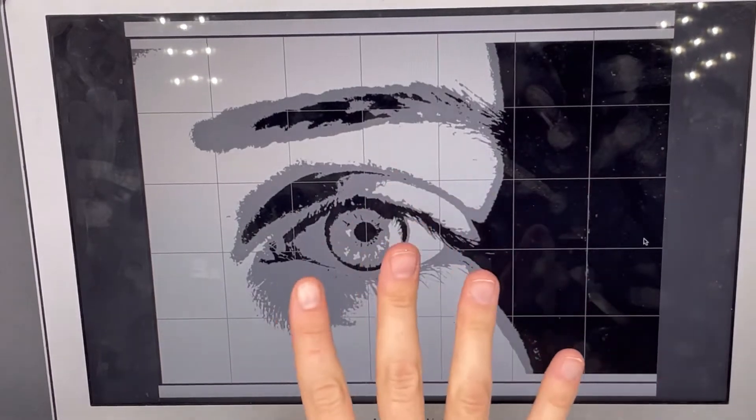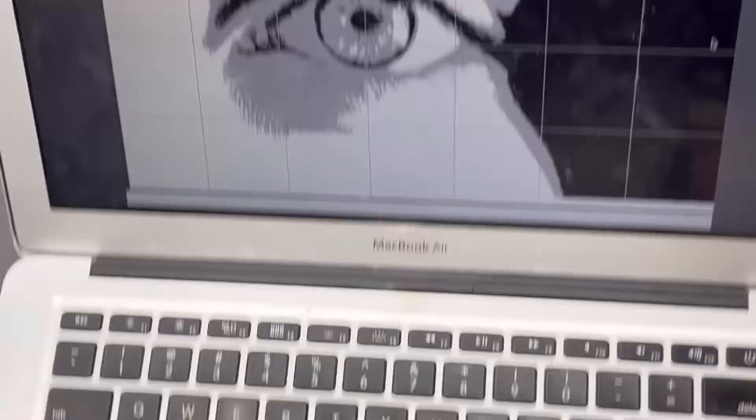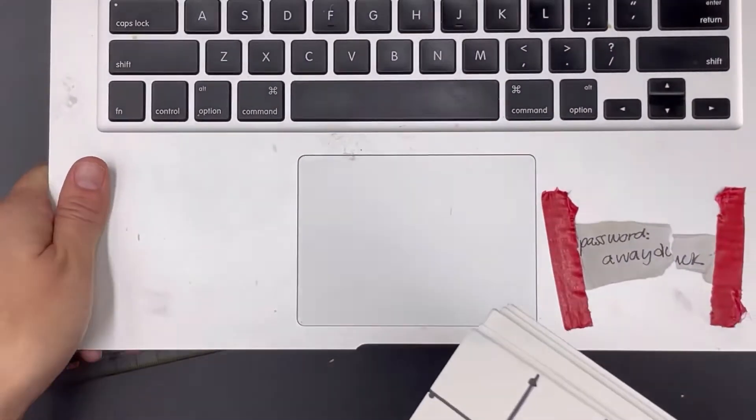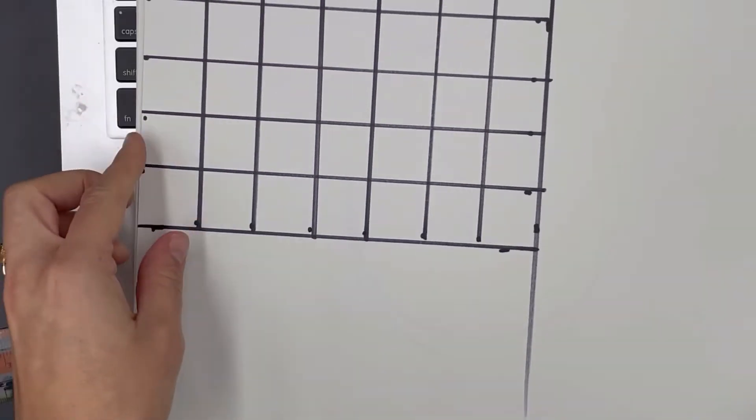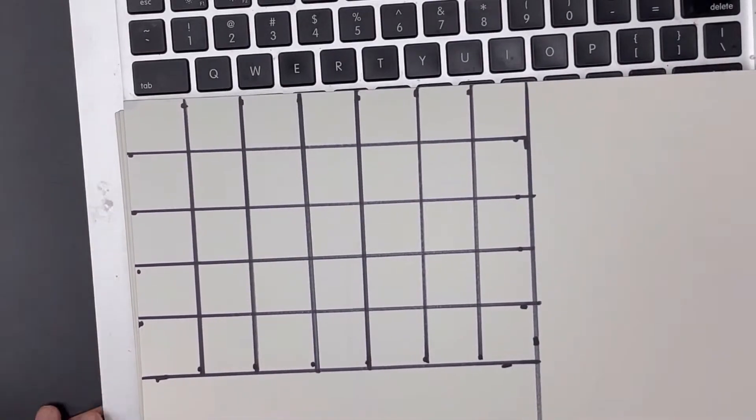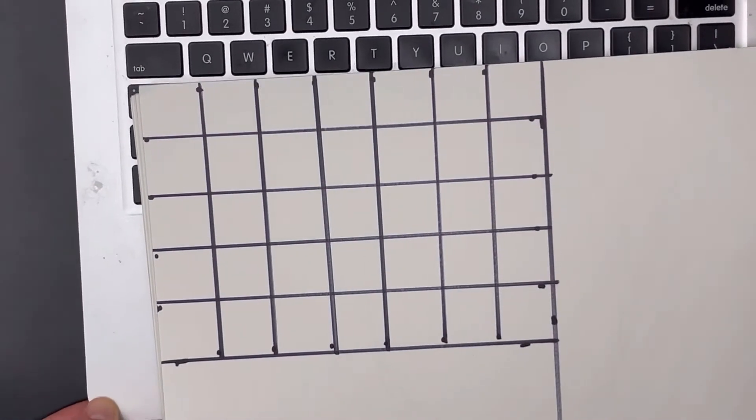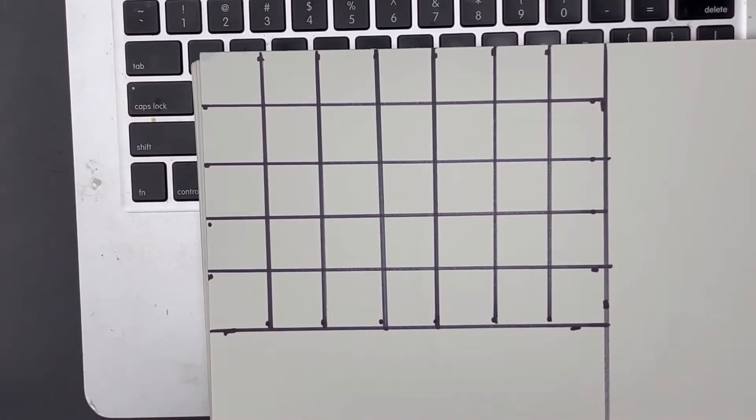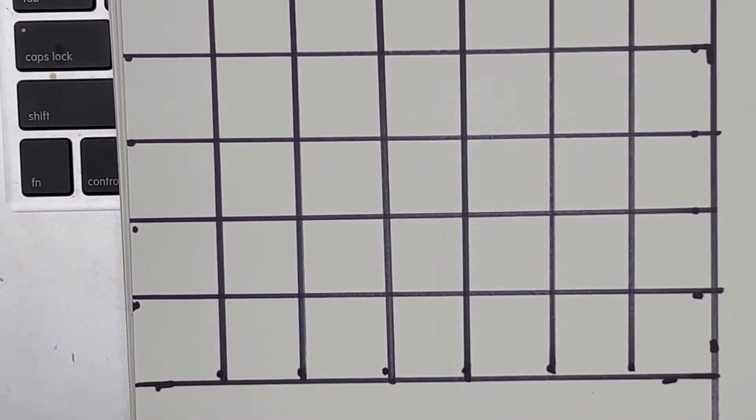So I'm looking at this reference picture the entire time, and now I have my grid drawing, which lines up with my reference picture so that my reference picture and grid are both 5 inches by 7 inches.